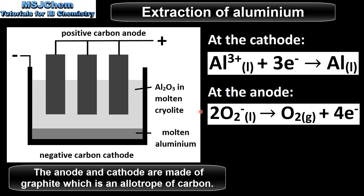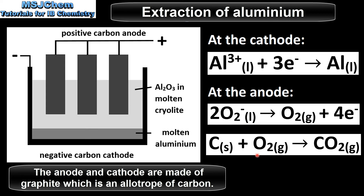At the anode, oxide ions lose electrons to form molecular oxygen, which is oxidation. The oxygen that's produced reacts with the carbon anode to form carbon dioxide. Because of this, the graphite that makes up the anode must be renewed on a regular basis.